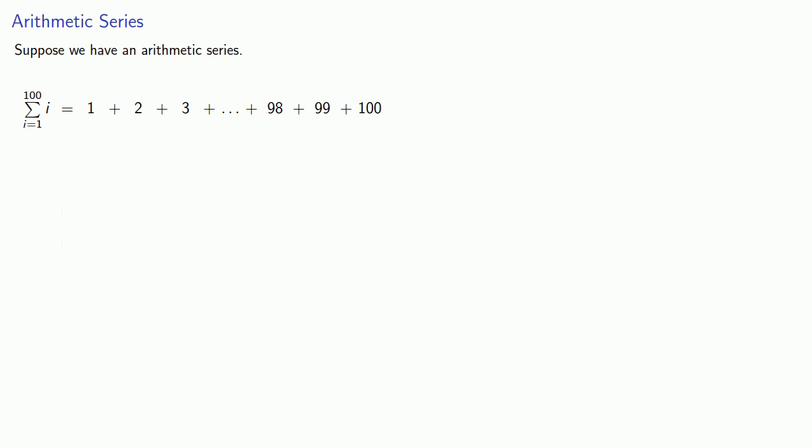Now because this is a sum, we can order the terms any way we want to. Why does reversing the order help us? Well if you notice, if I sum vertically, the sum of these first two terms is 101.